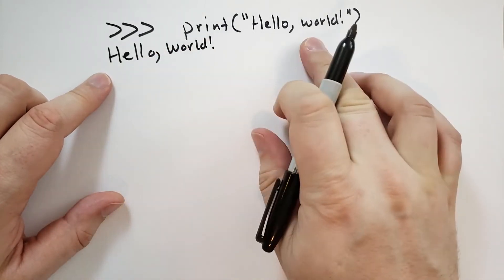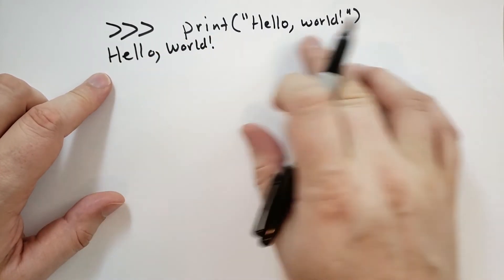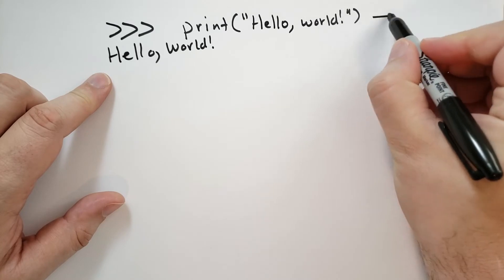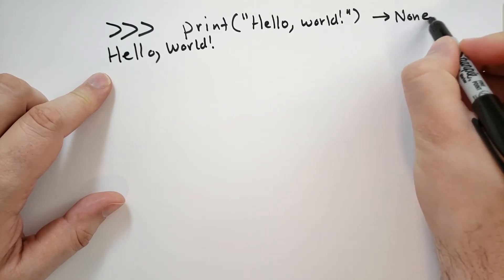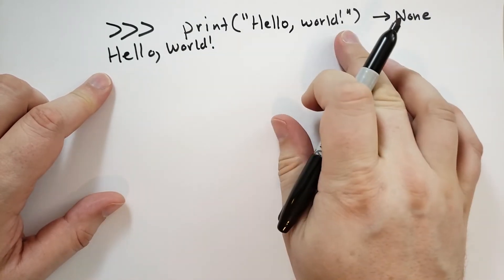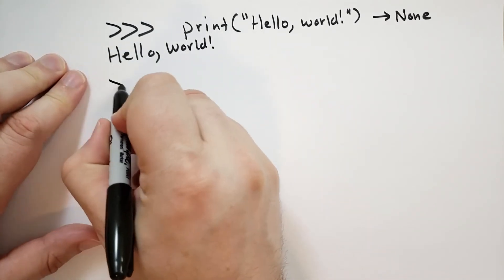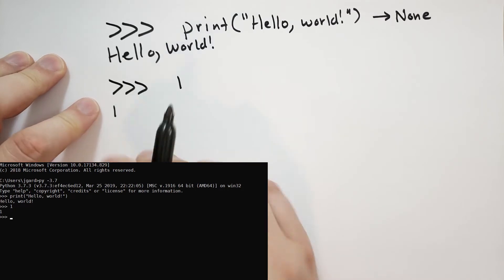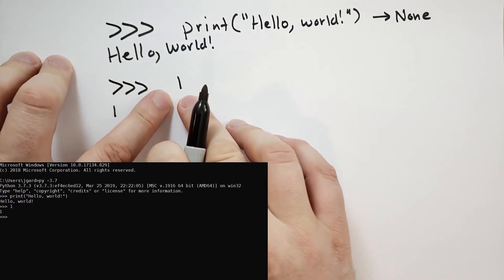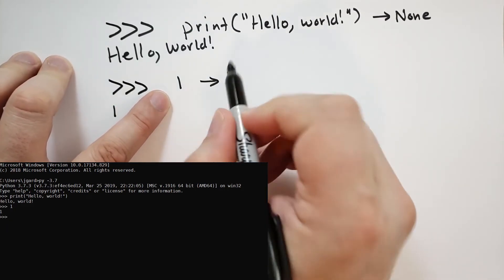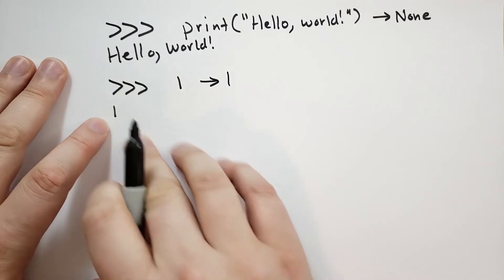What it did here is because this statement evaluates to None, that expression evaluates to None because print doesn't return anything, it didn't show anything. It just showed the print results. If you were to type in something like 1, then you will see a 1 appear here. The reason why is this statement evaluates to 1 obviously, and so it shows you the evaluation of that statement.